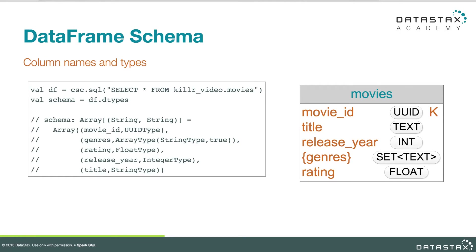That's great if you just want something human readable, but suppose you need programmatic access to the schema. The dtypes method is going to give you an array with the schema in it. As you can see by the output on the slide, it's an array of two-element tuples — the first element being the column name and the second being the data type. So if you need to introspect the schema of a data frame programmatically, this is a great way to go about it.